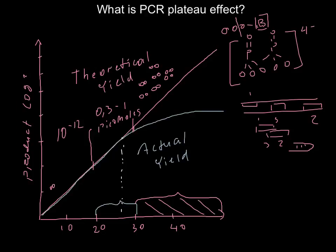At the plateau stage, accumulation of undesirable products continues while the target product does not increase — this is the stage we want to avoid. PCR generally provides best results between 20 and 30 thermocycles.